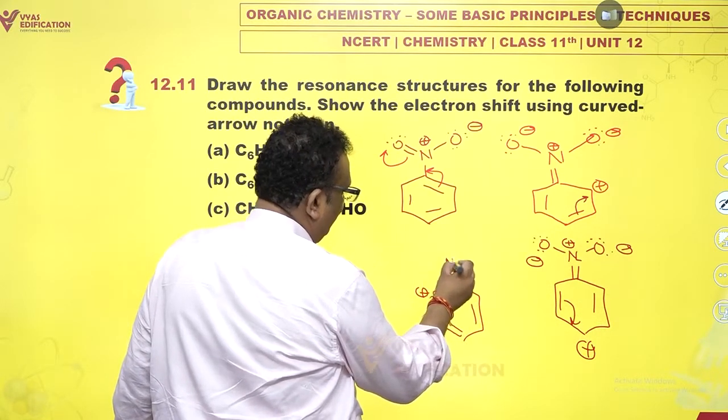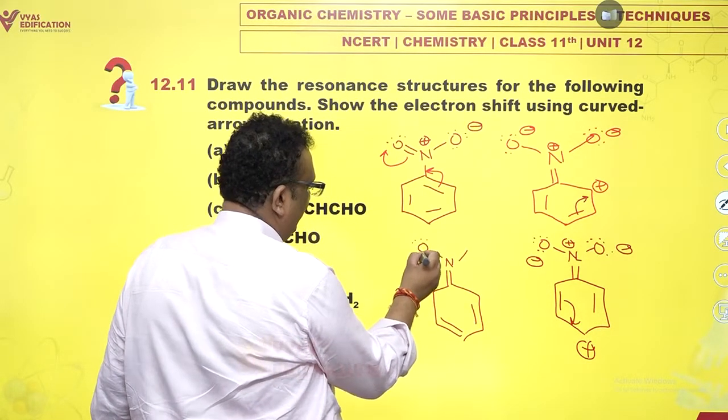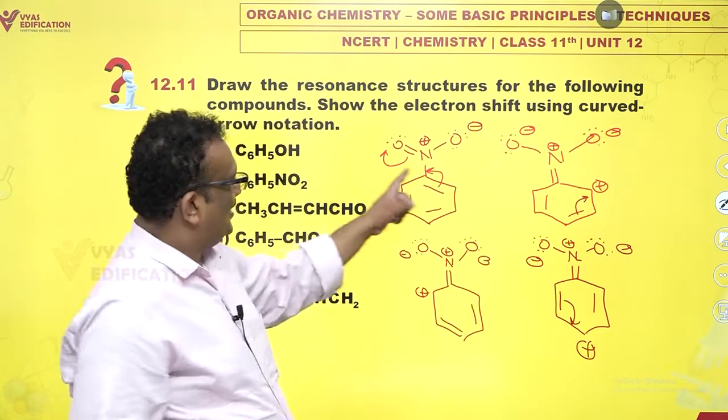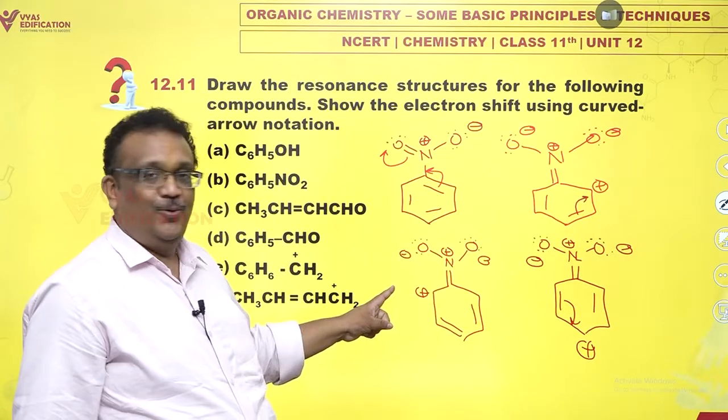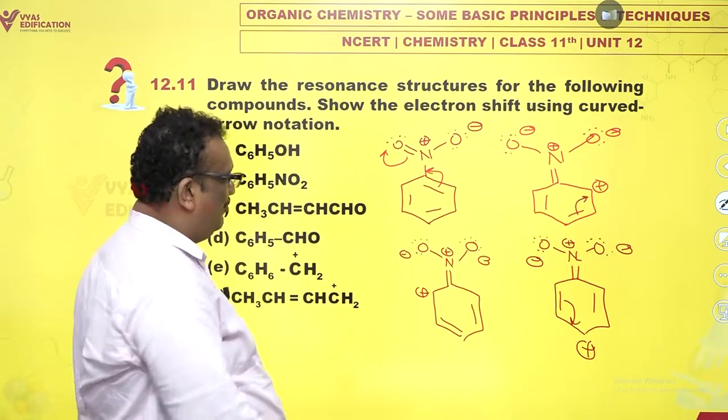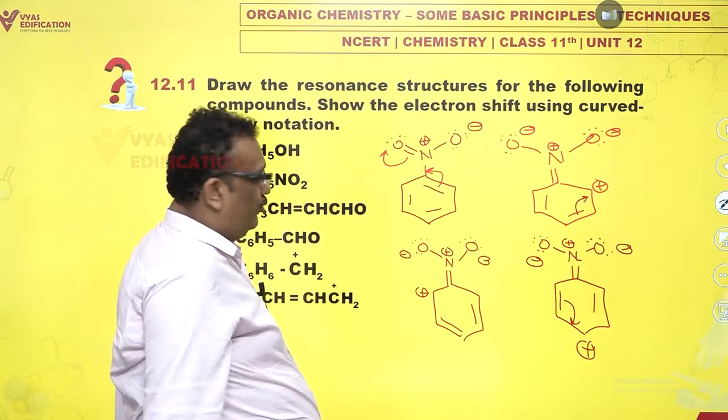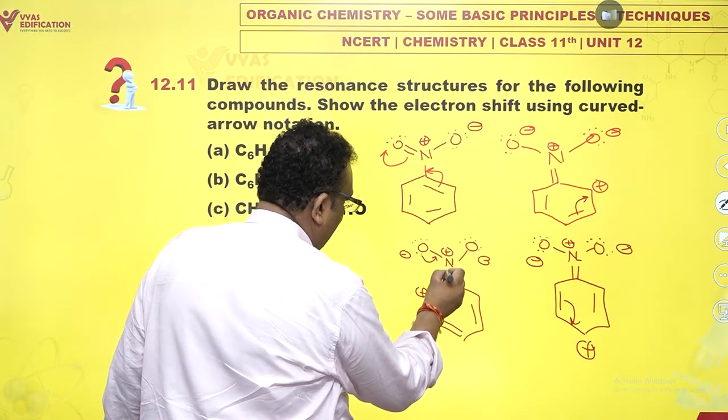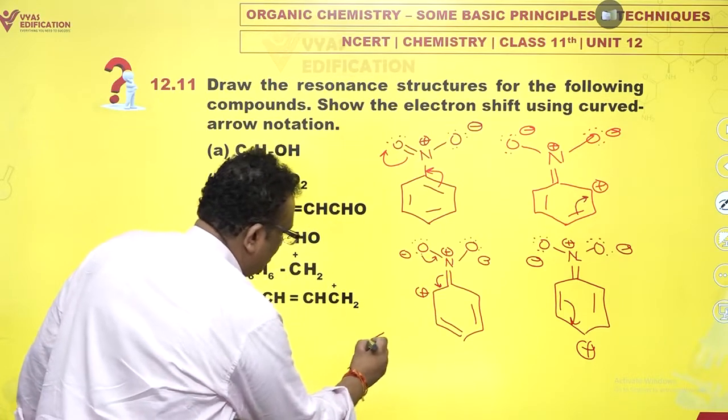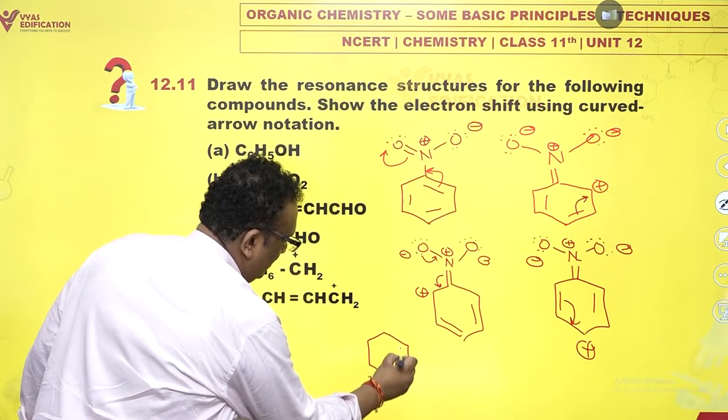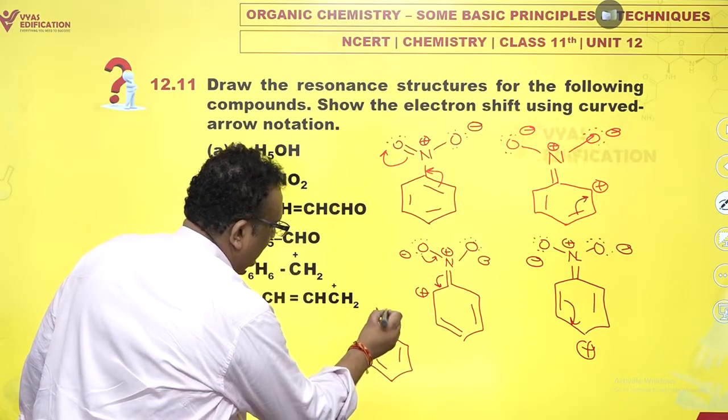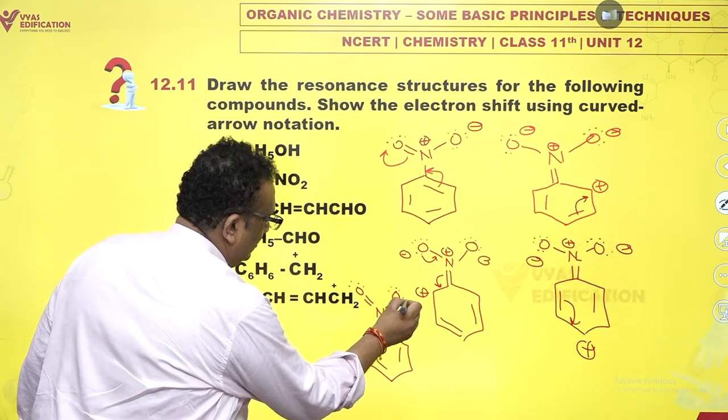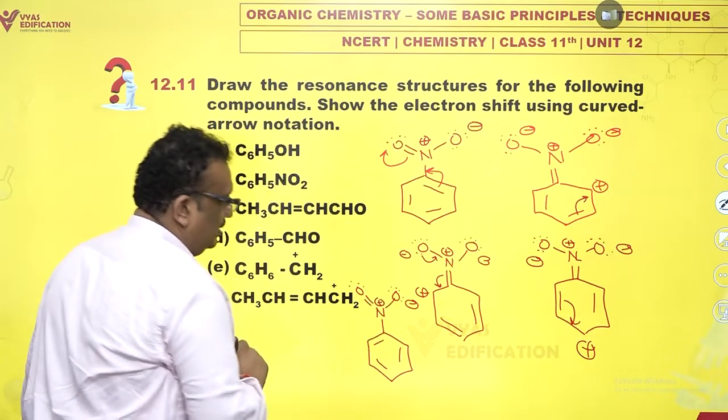One more, and what do I get? I get once again a positive charge on ortho location. Please note it has not touched meta location. It's like ortho, para, ortho, and then back again. Back again would be voila, voila. This can come back and this can go here.